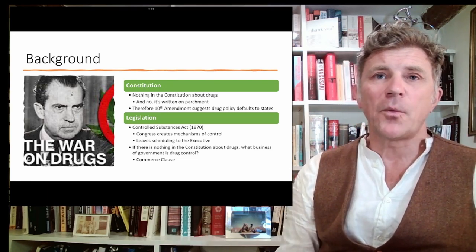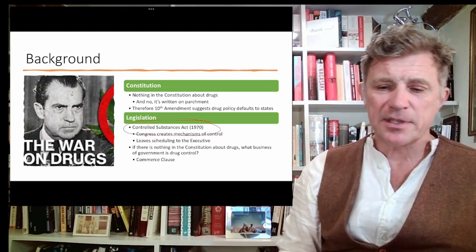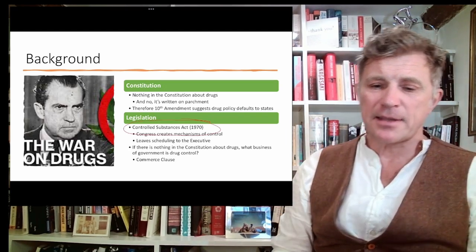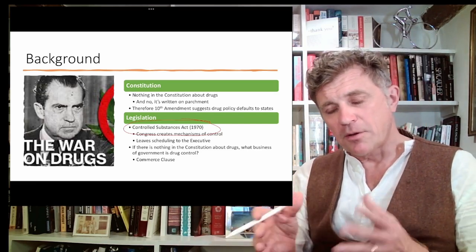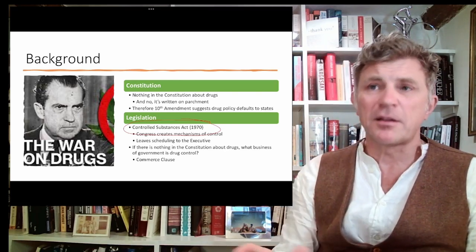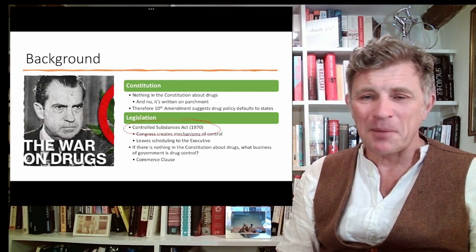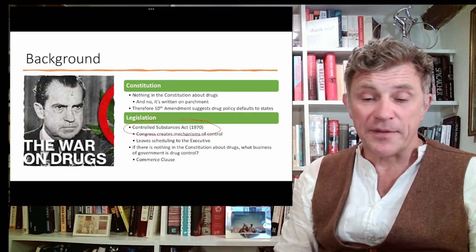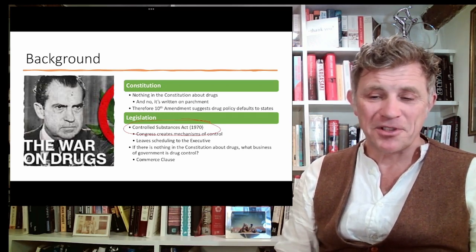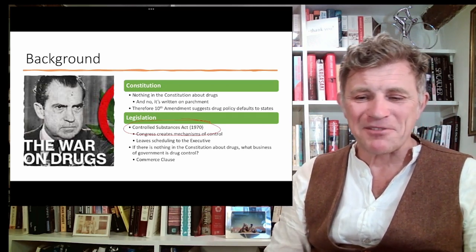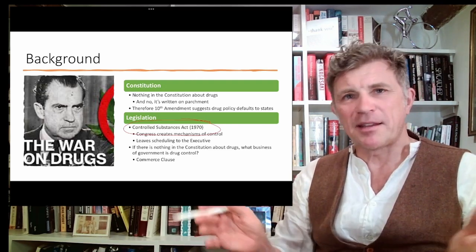It starts off with the very opposite of federalism. We have the Controlled Substances Act of 1970, and this was passed on the Commerce Clause, the Supremacy Clause, and the General Protection Clause. There is nothing in the Constitution about drugs — and there's a nice story that it was written on hemp paper. One of the original drafts might very well have been, but the actual copies of the Constitution in libraries around the world are written on proper parchment.